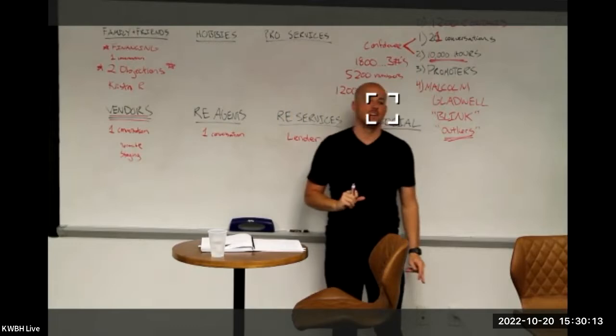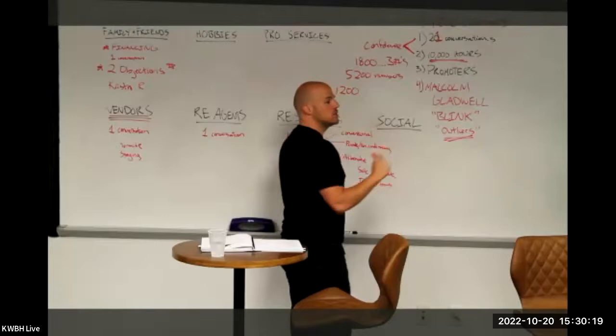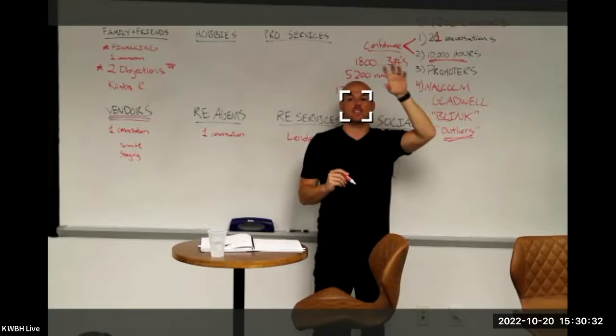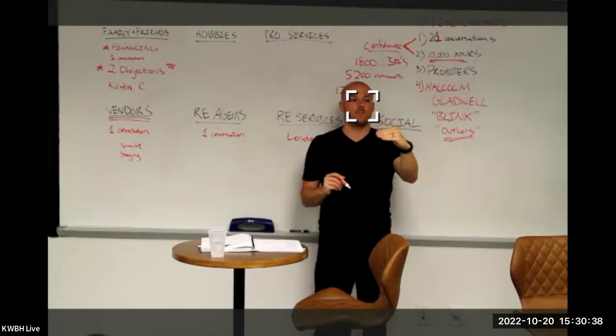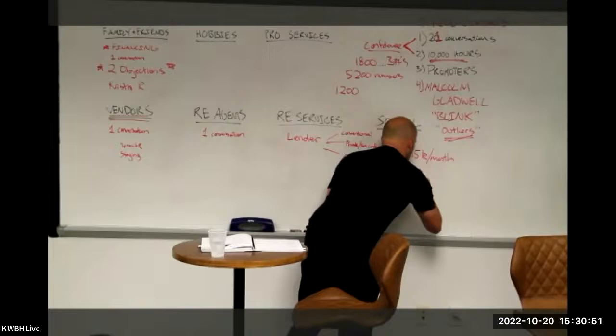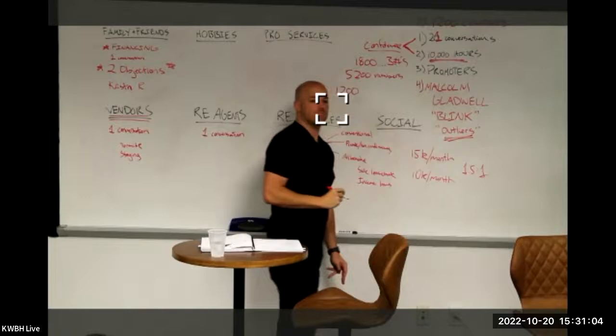The debt service — which is just a fancy way of saying mortgage — the debt service coverage ratio is the ratio by which you have income larger than the payment. If a property produces $15,000 a month in income after expenses and you're borrowing $10,000 a month, the ratio is 1.5 to 1. That means you've got one and a half times coverage over the debt.